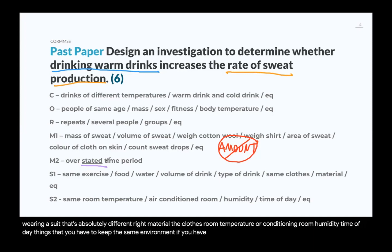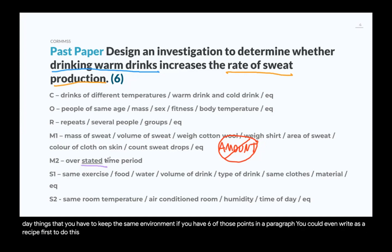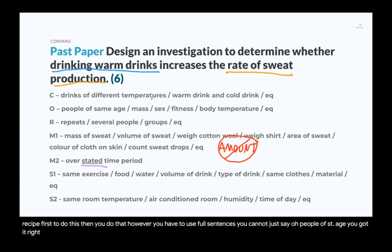If you have six of those points written in a paragraph — you can even write it as a recipe, saying 'first do this, then do that' — however, you must use full sentences. You can't just write 'people of same age'; you need a full sentence. If you have six of those points, you have the full marks for this question that is guaranteed to show on your exam.